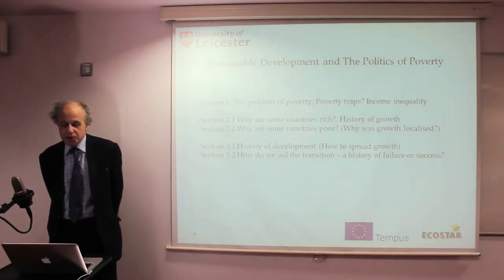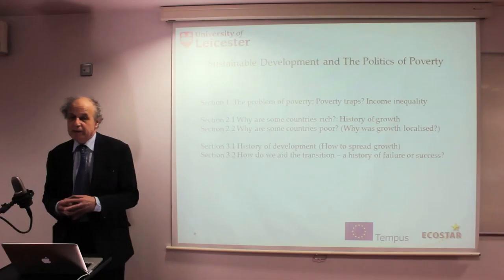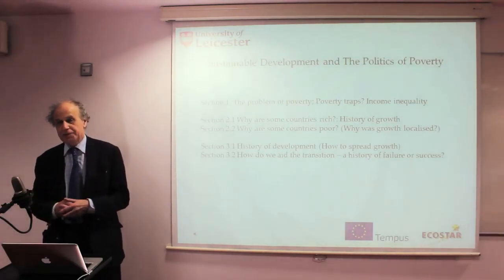So what we're going to talk about is the problem of poverty and poverty traps, income inequality in the first part of this unit. And then we'll look at why some countries are rich, the history of growth of the world economy. And then we'll look at the converse — why some countries are poor and why growth has been localised. And finally we'll go on to look at the history of development, how to spread growth to encompass the whole population of the world.